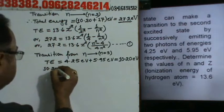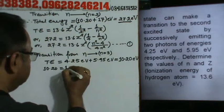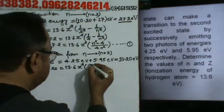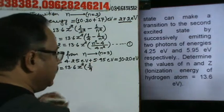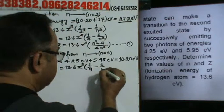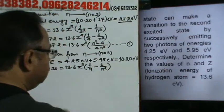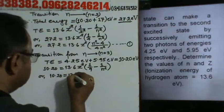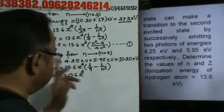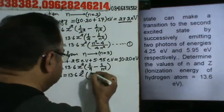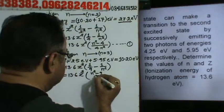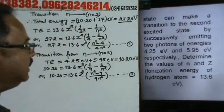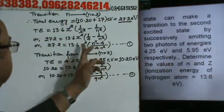For the transition to N equal to 3, we write: 10.20 = 13.6 Z² × (1/3² − 1/N²), that is 1/9 minus 1/N². Simplifying: 10.20 = 13.6 Z² × (N² − 9) / (9N²). This is equation number 2. We now have two equations and two unknowns, N and Z.